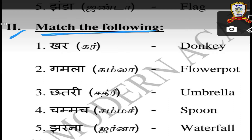Children, listen carefully. First one: Khar, Khar. Khar means donkey — D-O-N-K-E-Y, donkey. Khar means donkey.